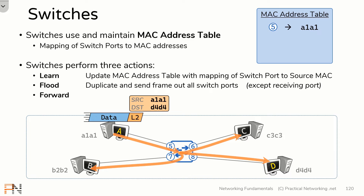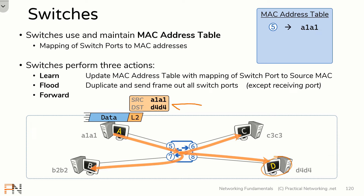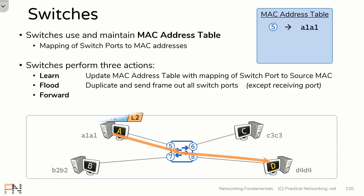All other hosts in this network are going to receive a copy of this frame. When host B and host C receive it, they're going to look at the destination MAC address, determine they are not the intended recipient, and silently discard that frame. Host D, however, will recognize the destination MAC address as its own and will accept that frame for processing. And that is how data gets from host A to host D.